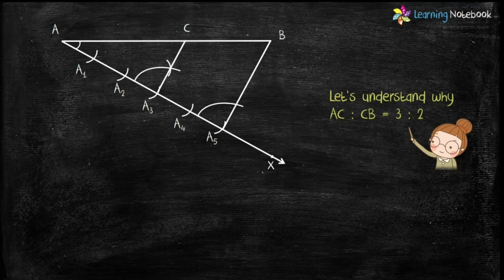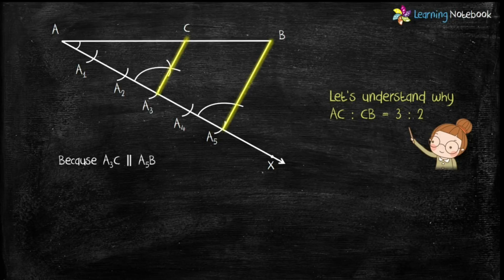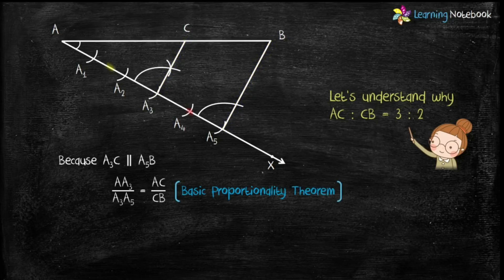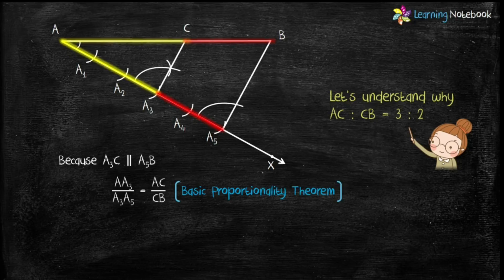Because we have drawn A₃C parallel to A₅B, therefore AA₃/A₃A₅ = AC/CB, because of the Basic Proportionality Theorem.